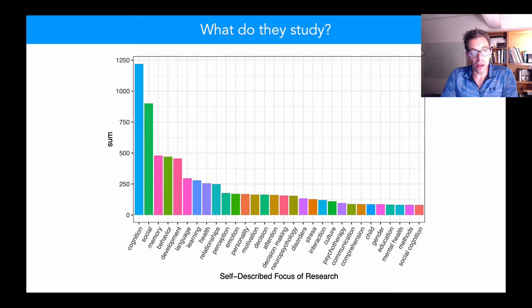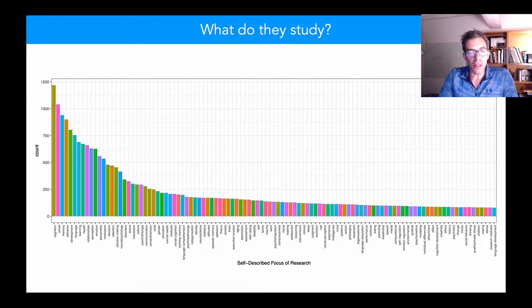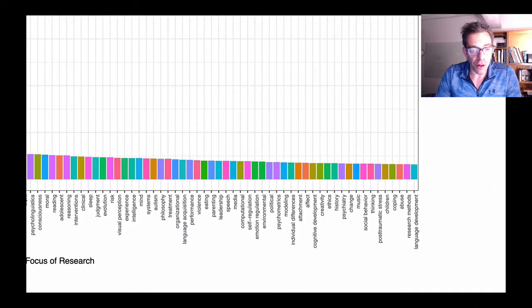They study a variety of topics. These are free responses with some parsing. Cognition, for example, is included if the person's response included the word cognition. One of the advantages of this large sample is that even people who study some of the less popular, relatively, topics, for example, language development over here, that still includes 80 people.